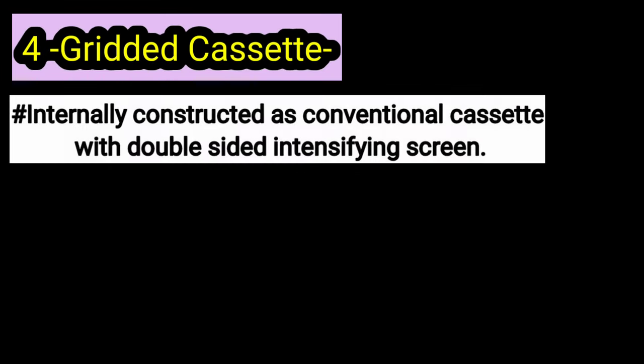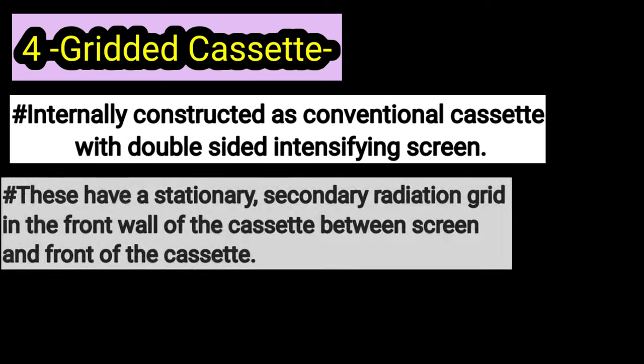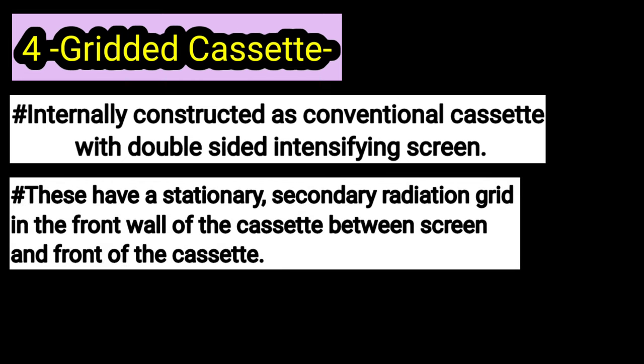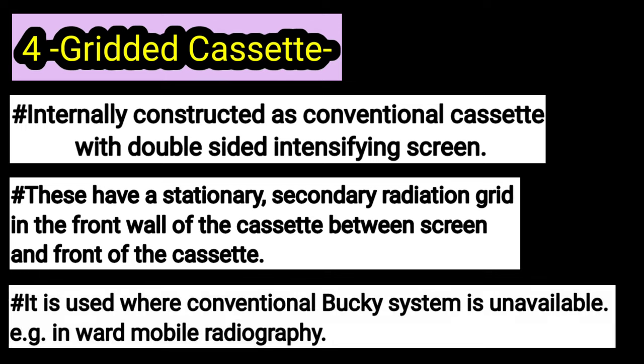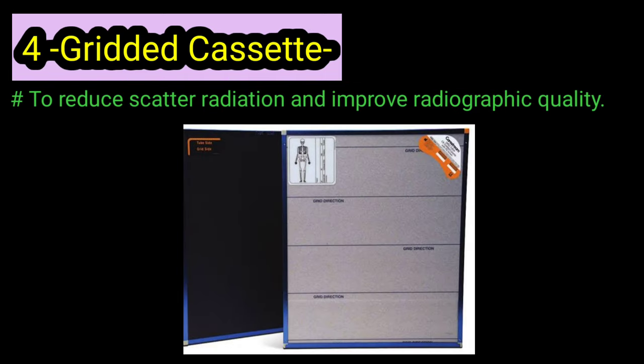The next type is the gridded cassette. The gridded cassette is designed as a double screen X-ray cassette. The only difference is that a stationary grid is mounted on the front side of it. The gridded cassette is used for bedside mobile radiography.